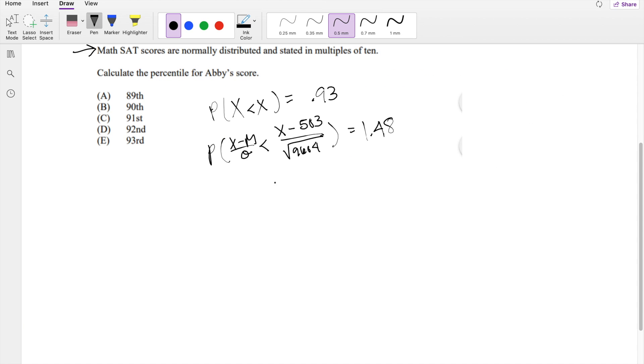So that's equal to x minus 503, divided by square root of 9604, which is 98, is equal to 1.48.